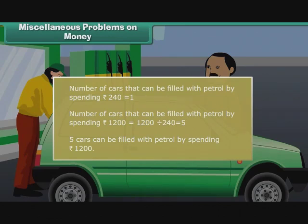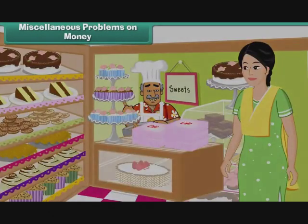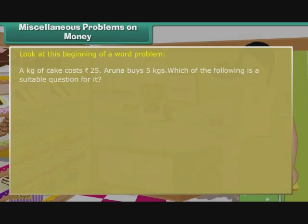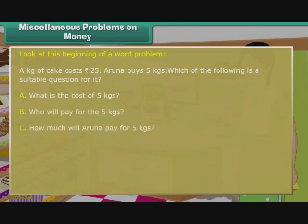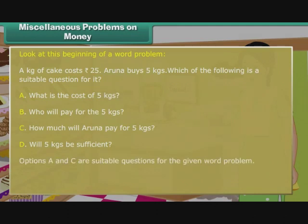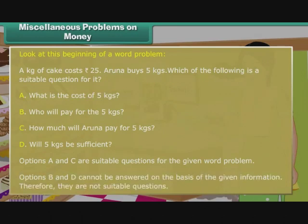So far, we have answered questions given to us. Let us now frame some questions. Look at this beginning of a word problem: a kilogram of cake costs 25 rupees, and Aruna buys 5 kgs. Which of the following are suitable questions? Option A: What is the cost of 5 kgs? Option B: Who will pay for the 5 kgs? Option C: How much will Aruna pay for 5 kgs? Option D: Will 5 kgs be sufficient? Option A and C are suitable questions. Option B and D cannot be answered on the basis of the given information, so they are not suitable questions.